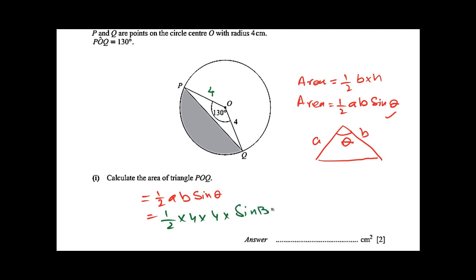Now, we have a calculator: 6.128... So 6.13 cm² is your final answer.